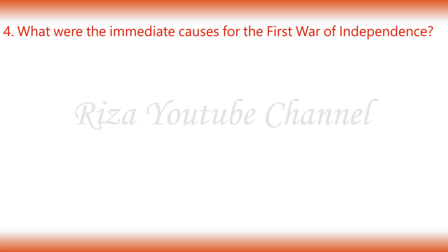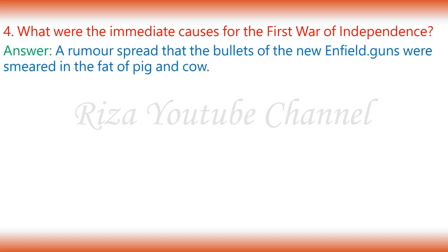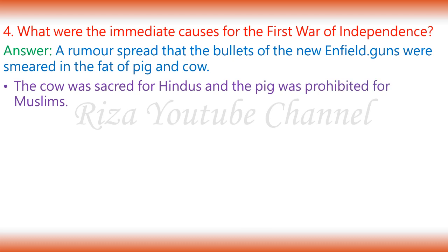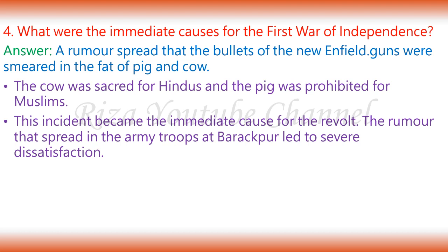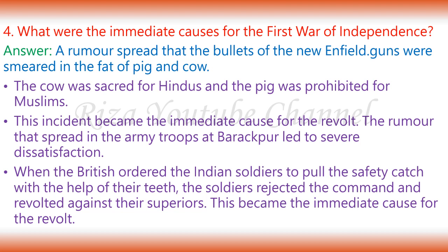4. What were the immediate causes for the first war of independence? A rumour spread that the bullets of the new Enfield guns were smeared in the fat of pig and cow. The cow was sacred for Hindus and the pig was prohibited for Muslims. This incident became the immediate cause for the revolt. The rumour that spread in the army troops at Barrackpore led to severe dissatisfaction. When the British ordered the Indian soldiers to pull the safety catch with their teeth, the soldiers rejected the command and revolted against their superiors. This became the immediate cause for the revolt.